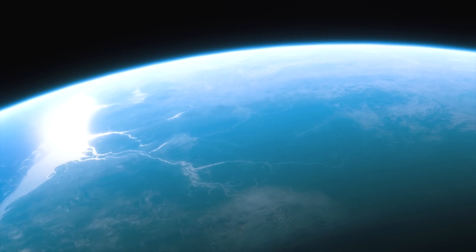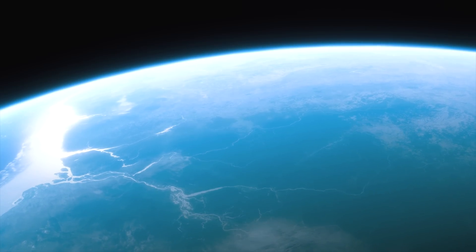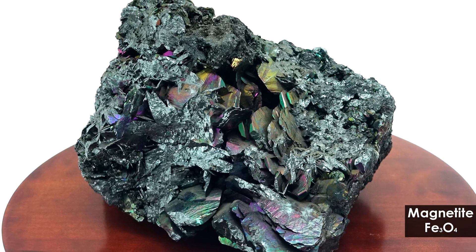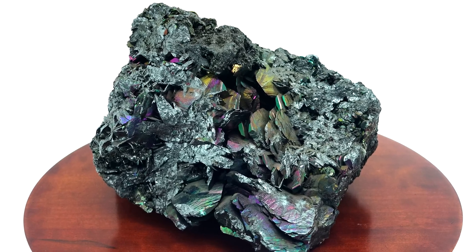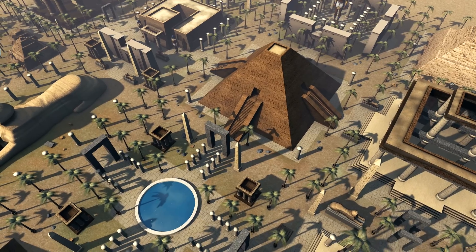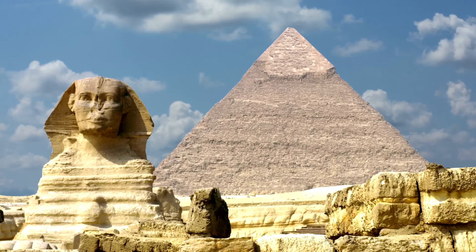First magnets have been created even before first people were, because even iron ore which is called magnetite has magnetic properties. Such natural and quite weak magnets were used even by the ancient Egyptians.